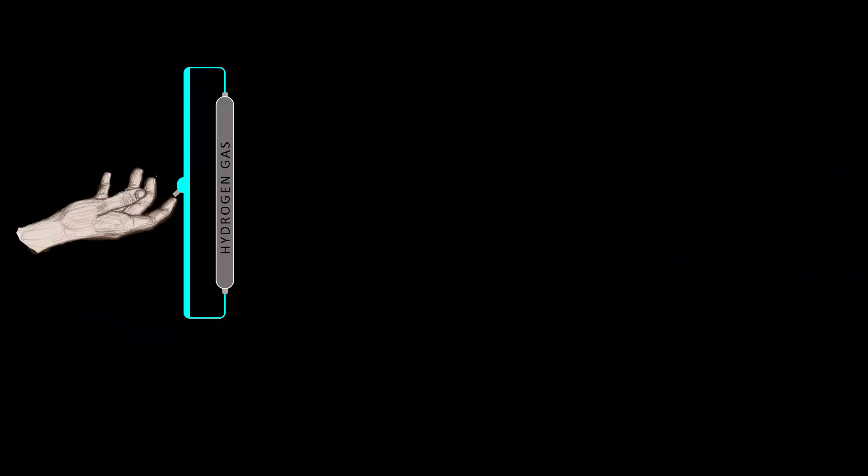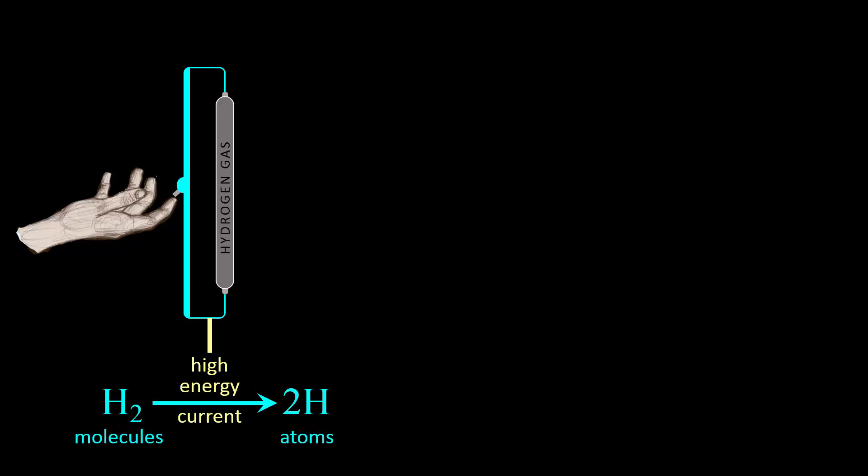Energized elements would emit specific visible colors of light, and the colors were specific to the element, but no one knew why this was happening. For example, if we energize hydrogen gas with an electric current, the hydrogen molecule is split into hydrogen atoms.